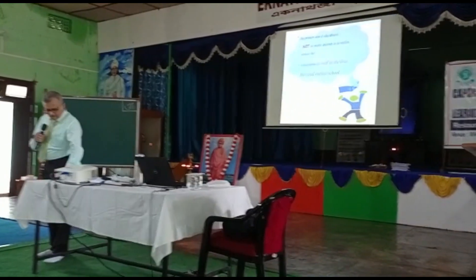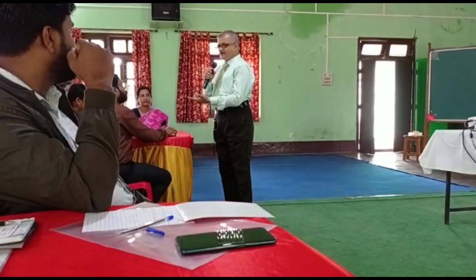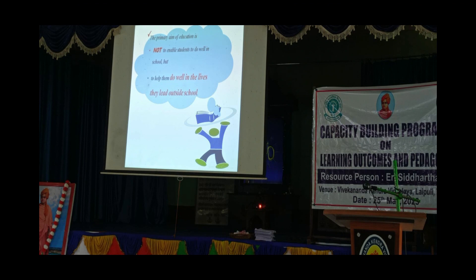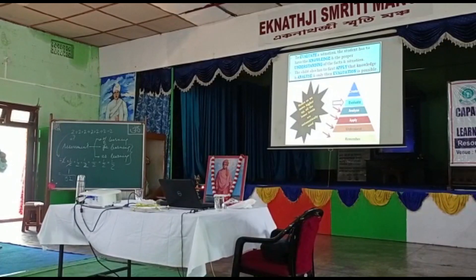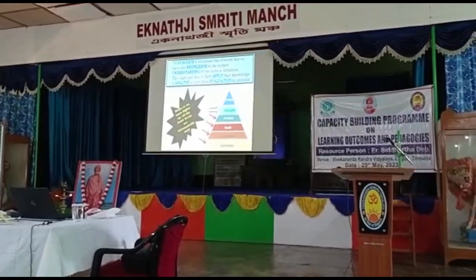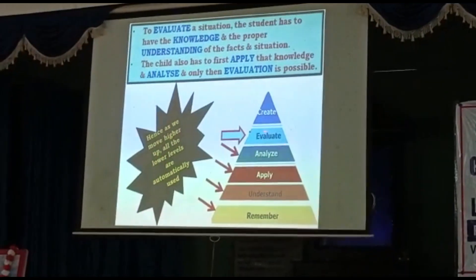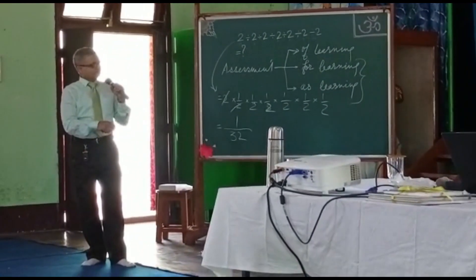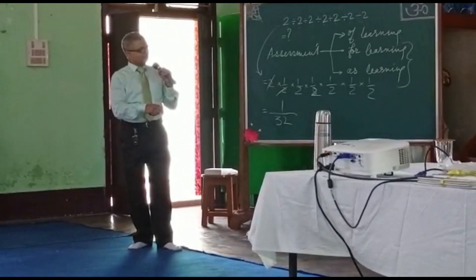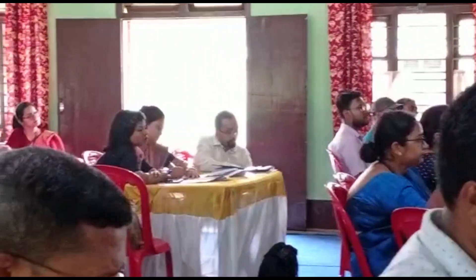Now, in this session today, as a summary, I have prepared one summary and gave it to all of you. As we move higher up, all the lower levels are automatically covered. That means if you make a question based directly on evaluation, the child must know the lower levels too. Instead of only setting questions from evaluate, or only making learning outcomes based on evaluate and create, you should make based on all these levels — as per the explanation given based on the class 8 chapter, coal and petroleum.